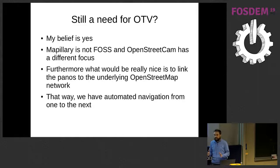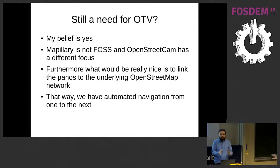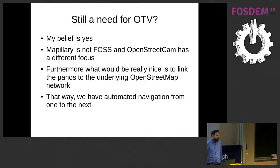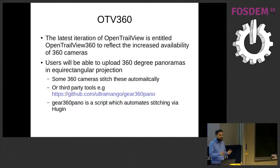So is there still a need for OpenTrailView? I would say yes, because it's doing something slightly different to both Mapillary and OpenStreetCam. What would be really nice is to automate navigation in OpenTrailView by using underlying OpenStreetMap data — your panoramas essentially snap to a nearby OpenStreetMap way, and then we can route from one panorama to all the nearby panoramas, auto-connecting them together. The alternatives don't appear to be doing quite that, and the original iteration of OpenTrailView required panoramas to be manually connected, which worked but was a bit long-winded.